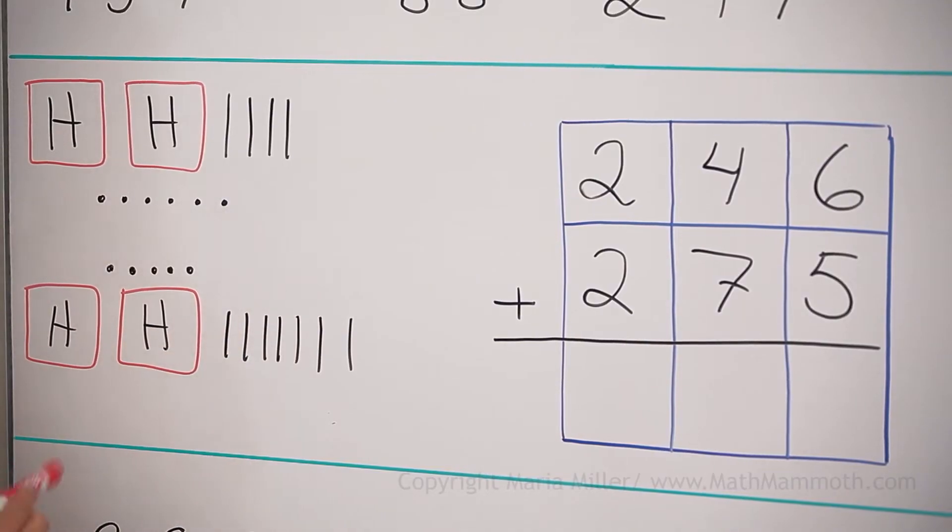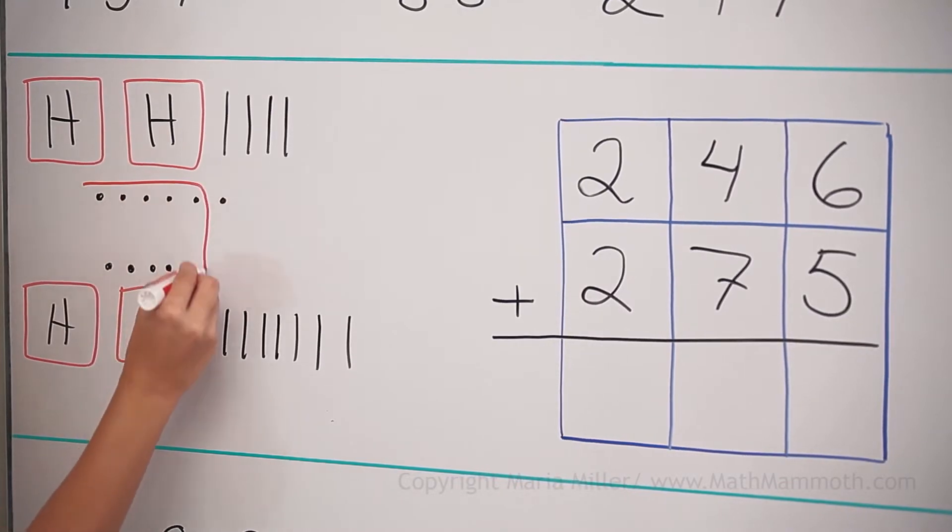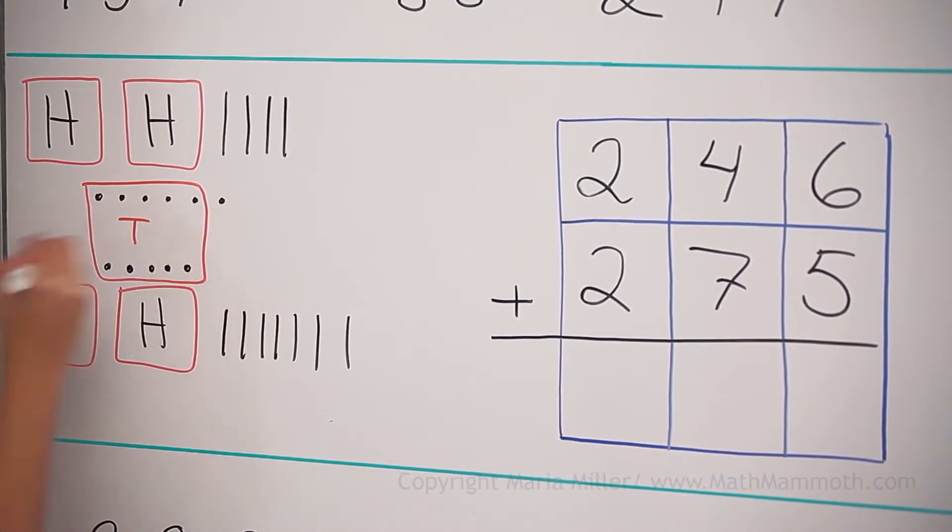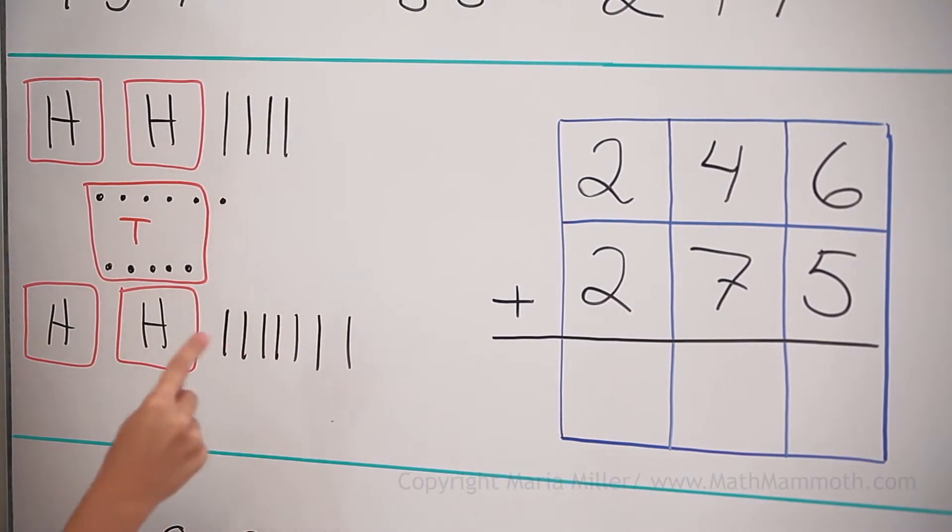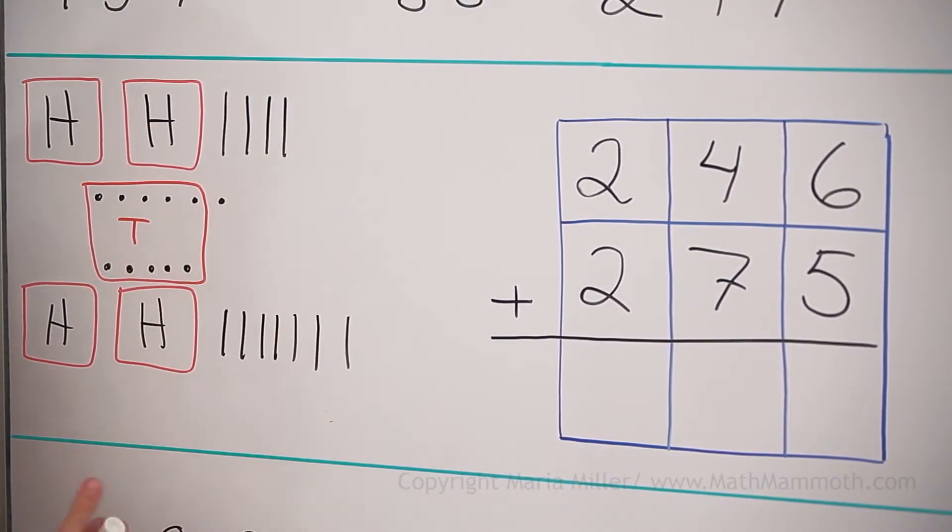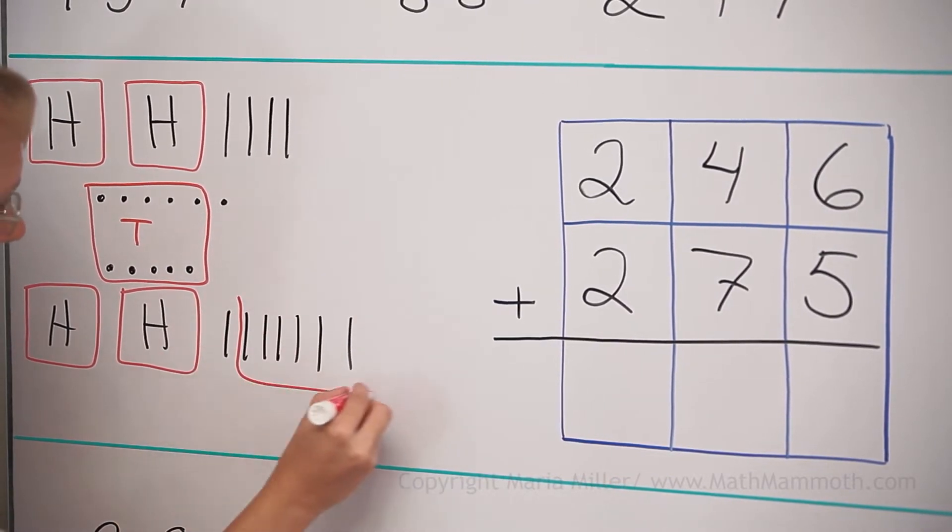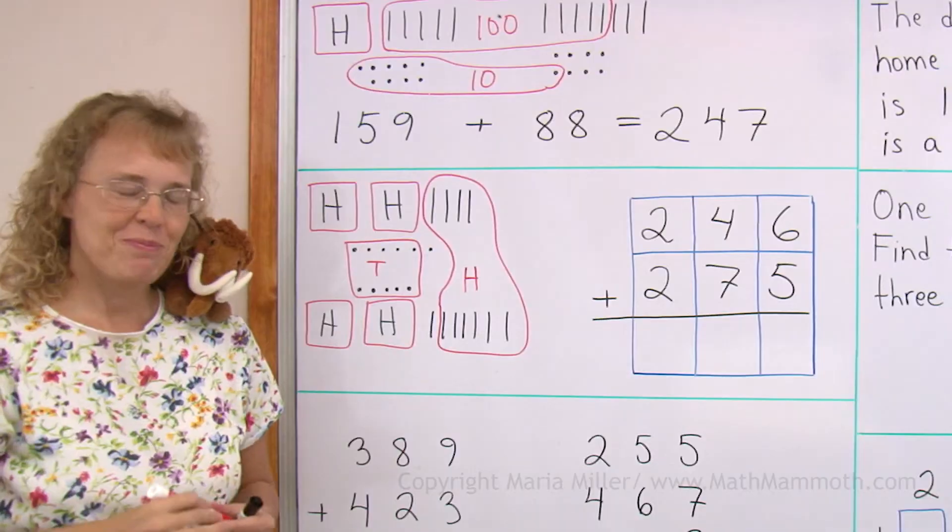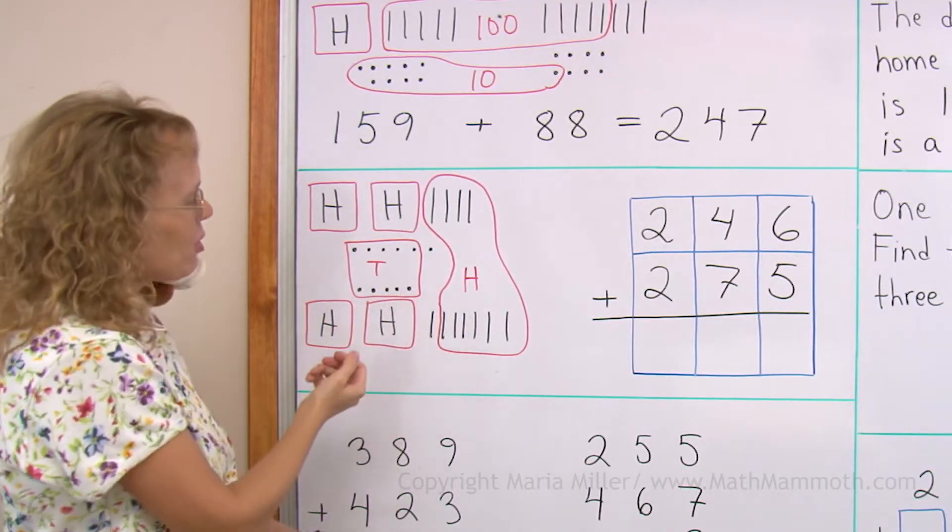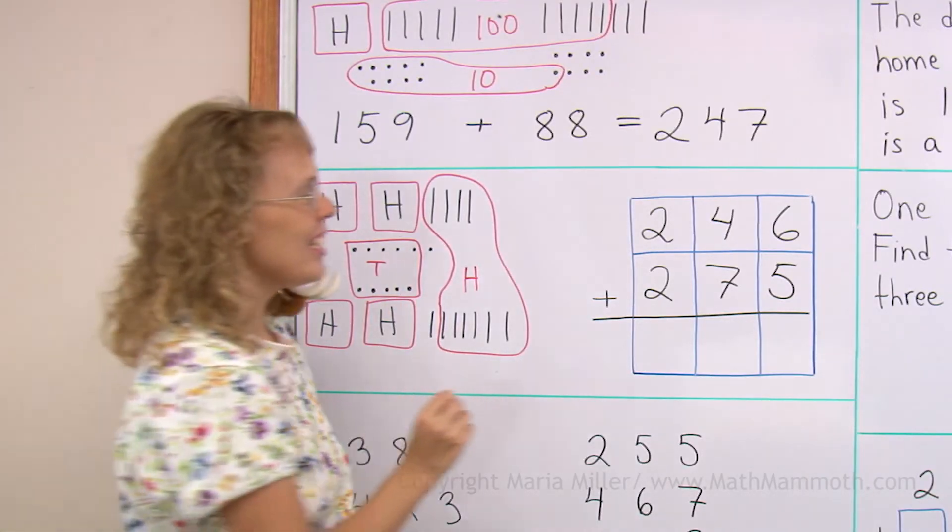In the visual model, in the picture here, I add the ones and I get a new 10. I can take 5 and 5. So there's a new 10. And then I also get the new 100 from all these 10s. For example, if I take 4 and then 6 from here. So there's a new 100.